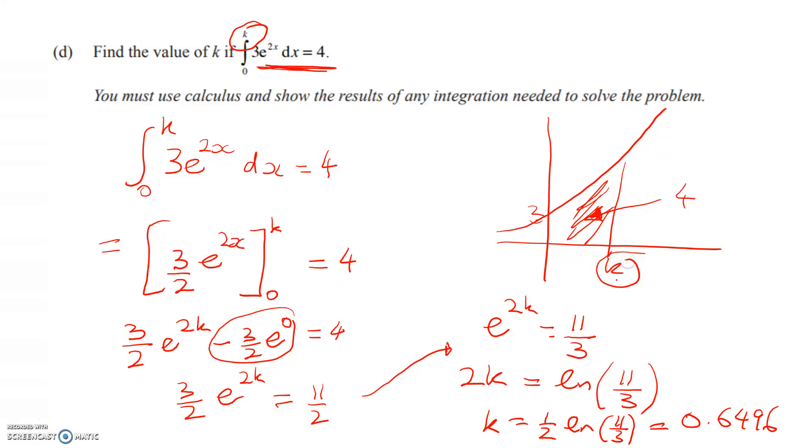And that's all there is to it. So my value of k here has now been discovered by us to be 0.6496. And when we make it that value, then the area under the curve between those two values, I'm just enjoying coloring in here, will be equal to 4. So that's all there is to it. And that's a merit question.